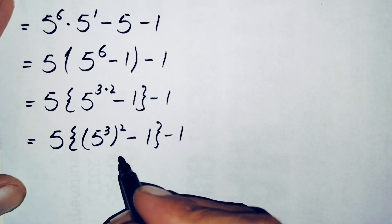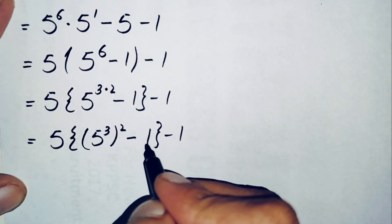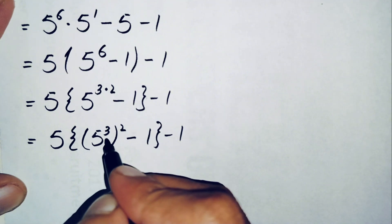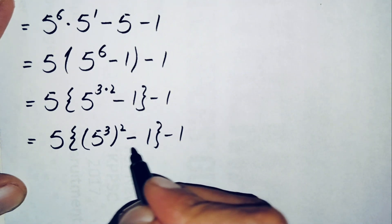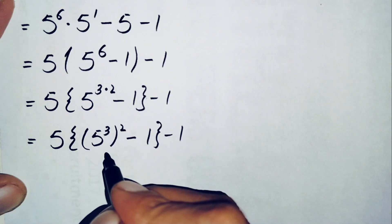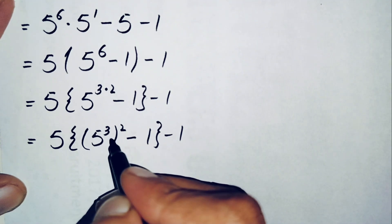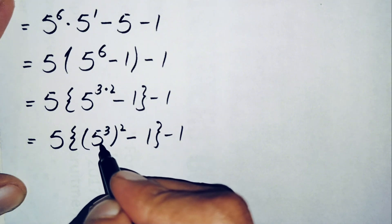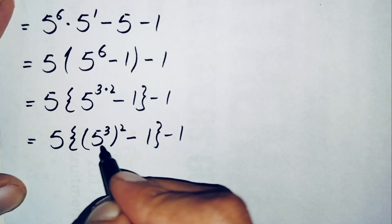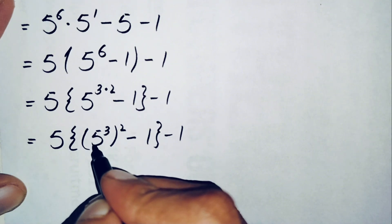We can solve this by two methods. Method one is to use the algebraic identity a squared minus b squared equals (a minus b)(a plus b), writing 1 as 1 squared. Method two is to find the value of 5 raised to power 3, square it, and subtract 1. We will use method two.